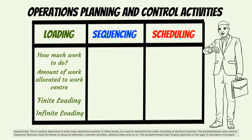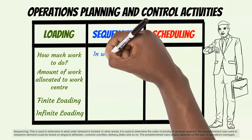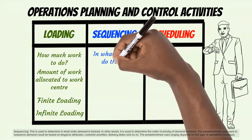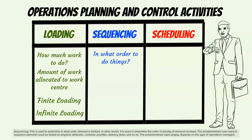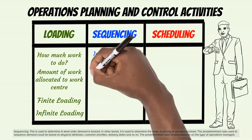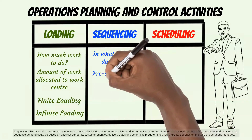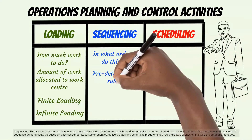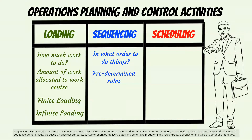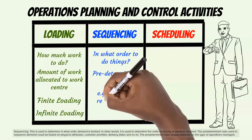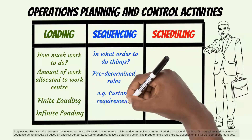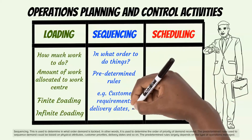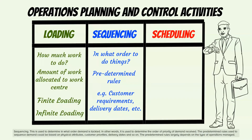Sequencing is used to determine in what order demand is tackled — in other words, the order of priority of demand received. The predetermined rules used to sequence demand could be based on physical attributes, customer priorities, delivery dates, and so on. These predetermined rules largely depend on the type of operations managed.